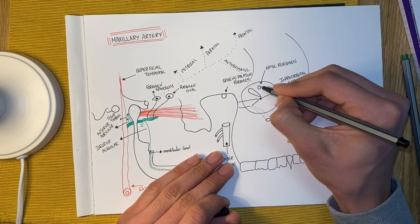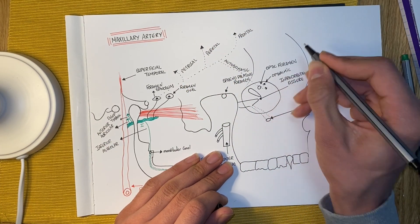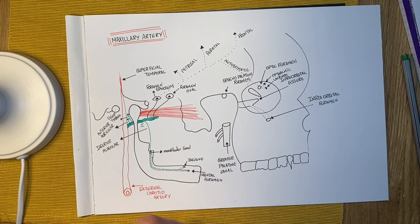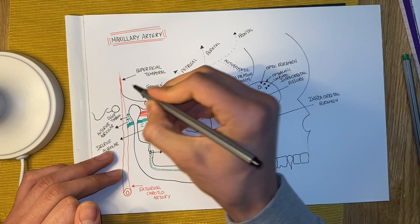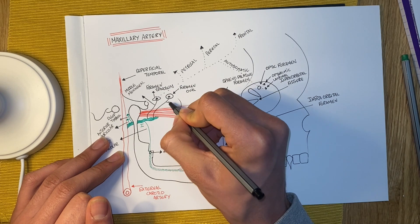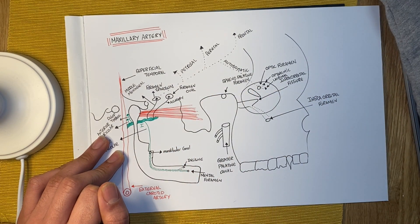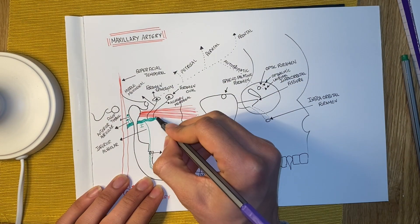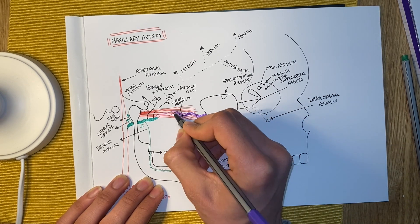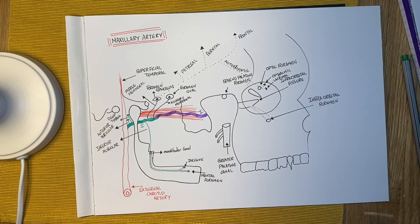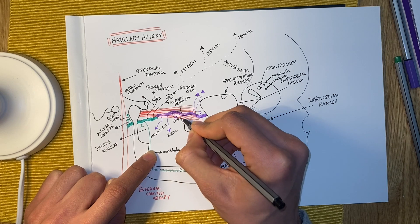The branches mentioned here just for inclusion from the middle meningeal, going back to label the middle meningeal here, and the accessory meningeal. Then we have the second part of the maxillary artery called the pterygoid. From here we also have five branches.